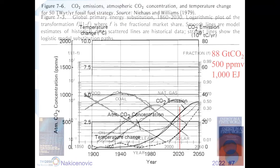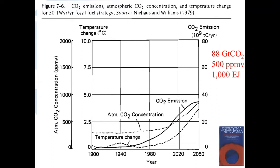Let me show you the scenarios from Energy in a Finite World — work that is essentially 50 years old, with the book published in 1981 after almost a decade of work. This is the high scenario, going all the way to 2050 — very similar to what we are doing now in the consortium going toward the end of the century. Emissions: twice as much as we have today, 88 gigatons instead of about 40. Concentrations: about 500 ppm, slightly higher than today. Energy: about 1,000 exajoules, about 20–30% more than the world uses now. This was a very high fossil fuel energy scenario.